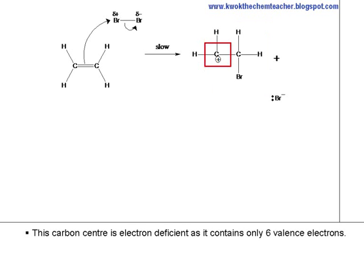This carbon center is electron deficient as it contains only six valence electrons. To obtain the octet, it will accept an electron pair from a suitable donor.